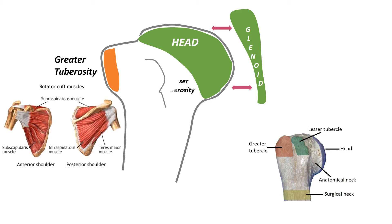Smaller and medial is the lesser tuberosity. It provides attachment to the glenohumeral ligament and another rotator cuff muscle, subscapularis.